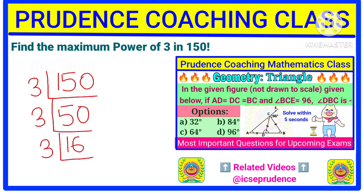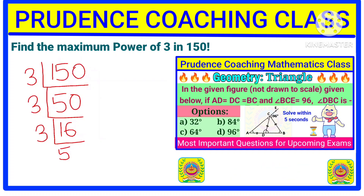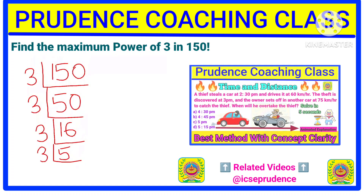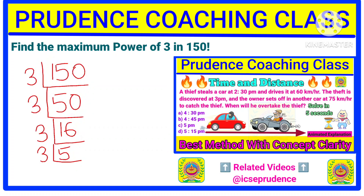Now divide 5 by 3: 3 × 1 = 3, and 3 × 2 = 6 which exceeds 5, so the quotient is 1. Since 1 divided by 3 gives 0, we stop here.